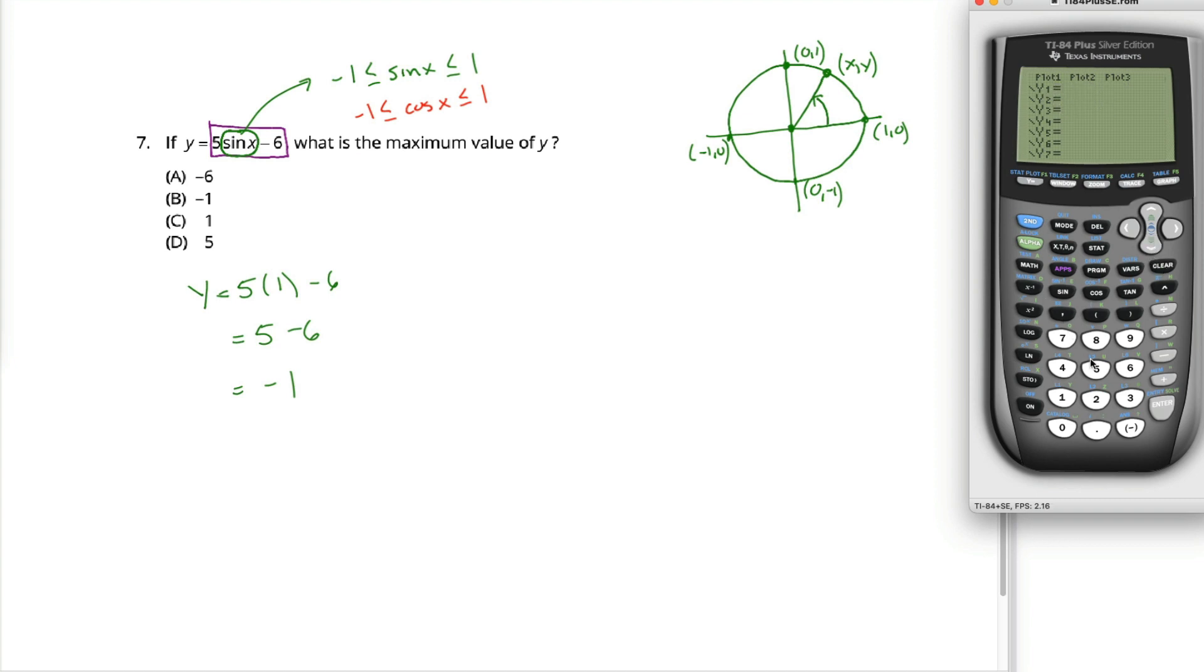I can make y equal to 5 times the sine of x. Close my parentheses, and then we want to subtract 6. Be careful. Make sure you use the subtraction key, not the negative key. These are your operations over here.